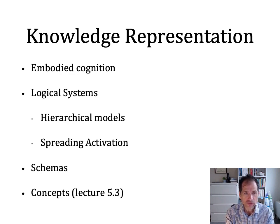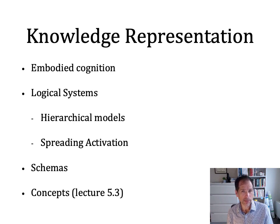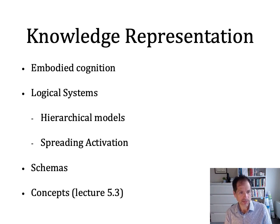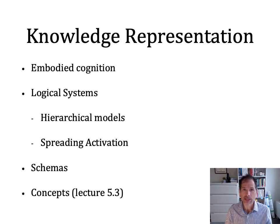We're going to talk about a few of them over the next few lectures. I'm going to talk about embodied cognition, and that's the idea that representations and knowledge go beyond just what's in the mind. They include information about how to grasp objects and how things feel and smell, taking into account some of the perceptual and sensory and motor aspects of things in the world. Then we'll talk about some logical amodal systems like hierarchical models and spreading activation. We'll also talk about schema theory, which is a way to represent information for events and information that helps you know how to behave in different situations.